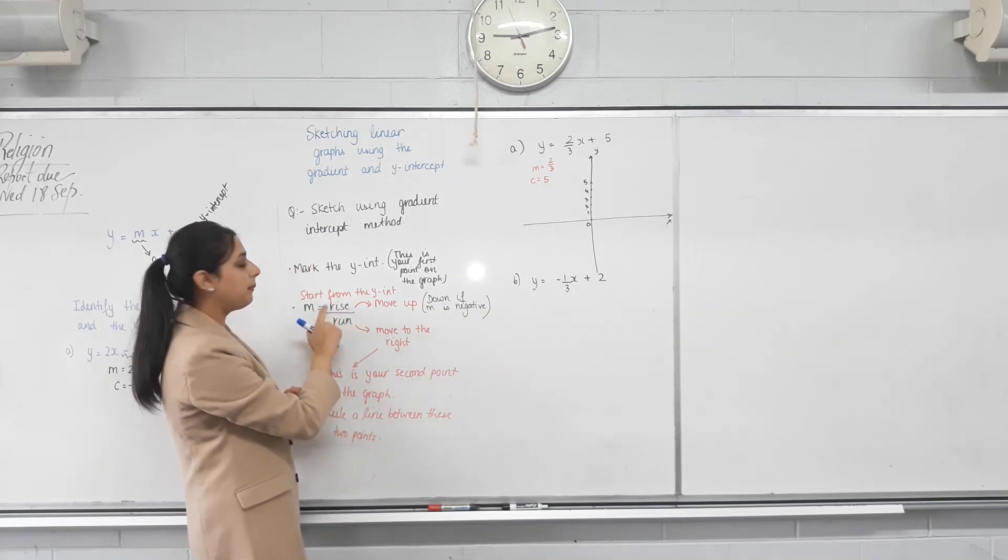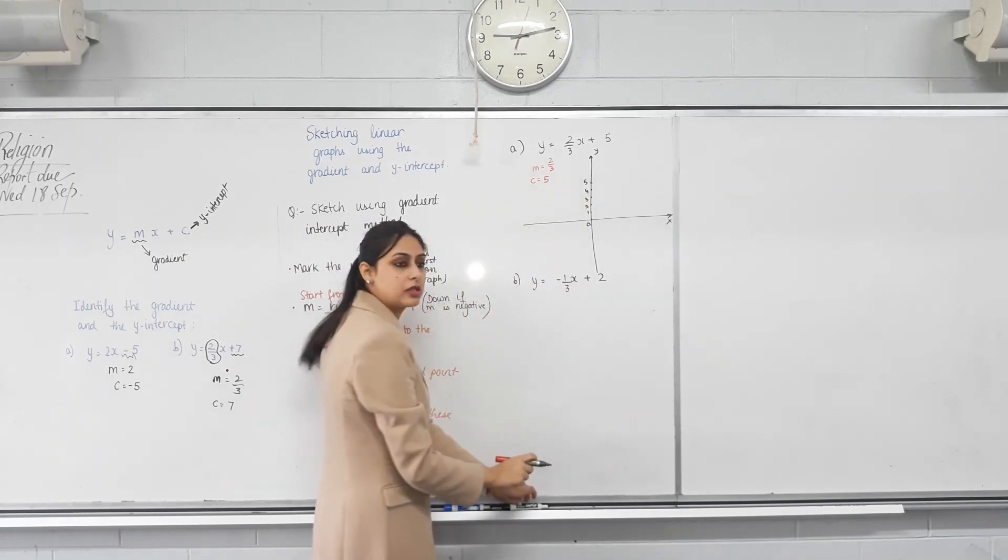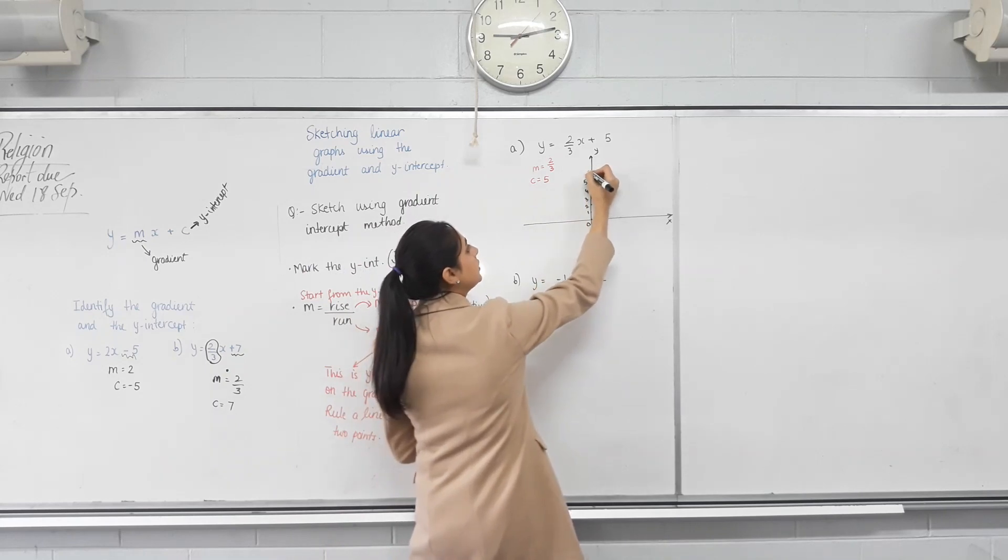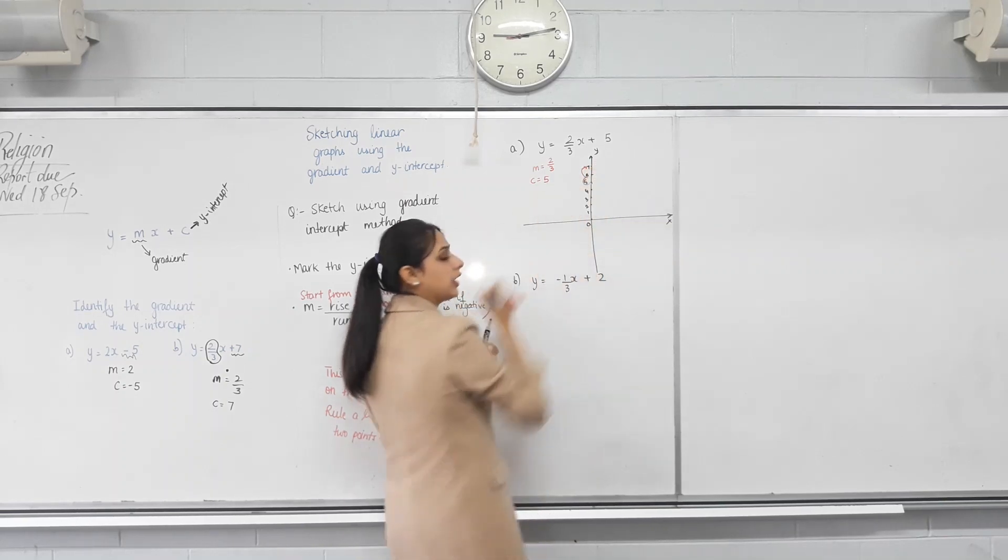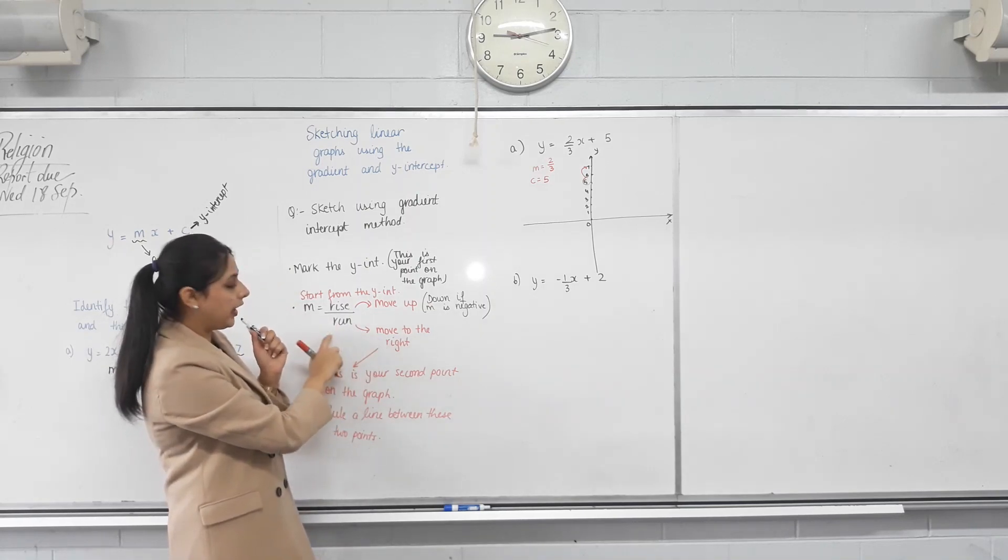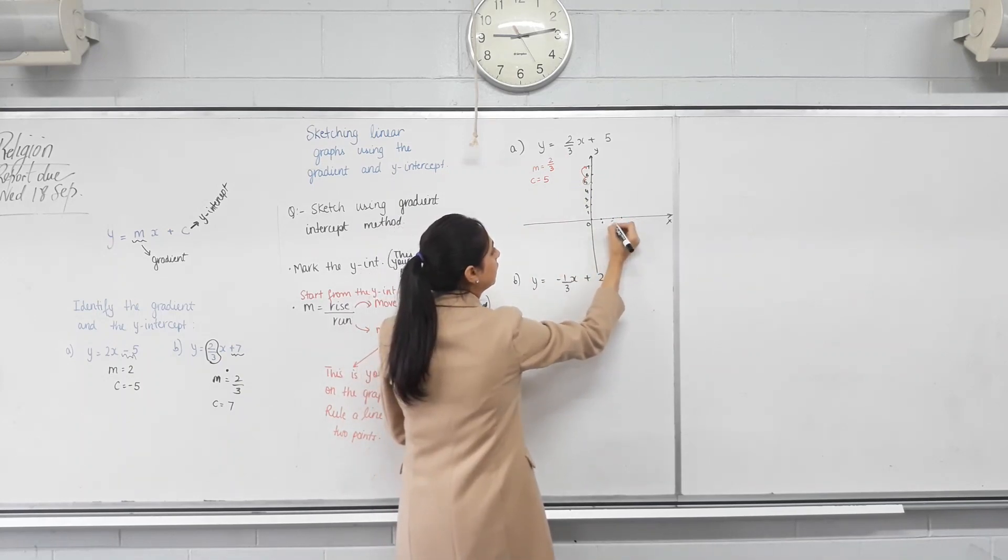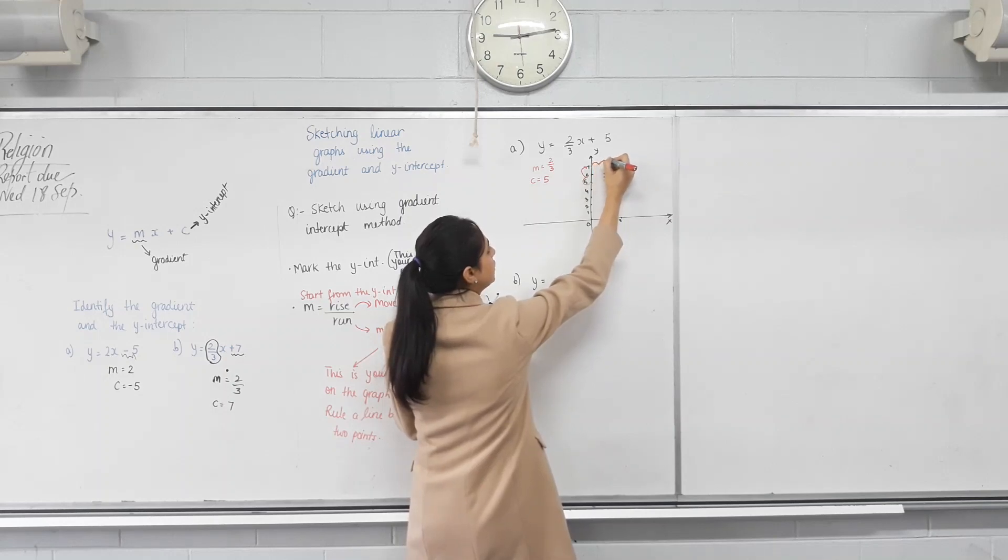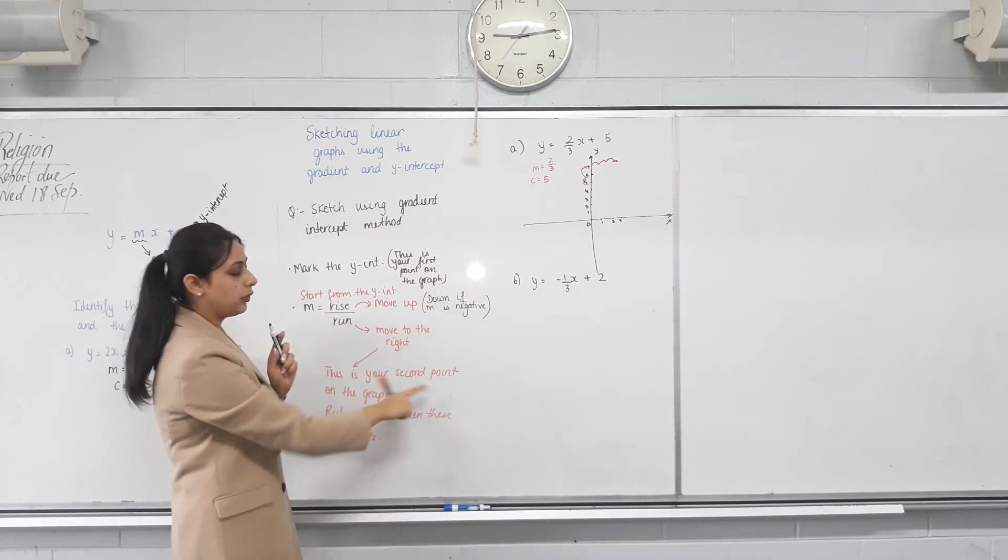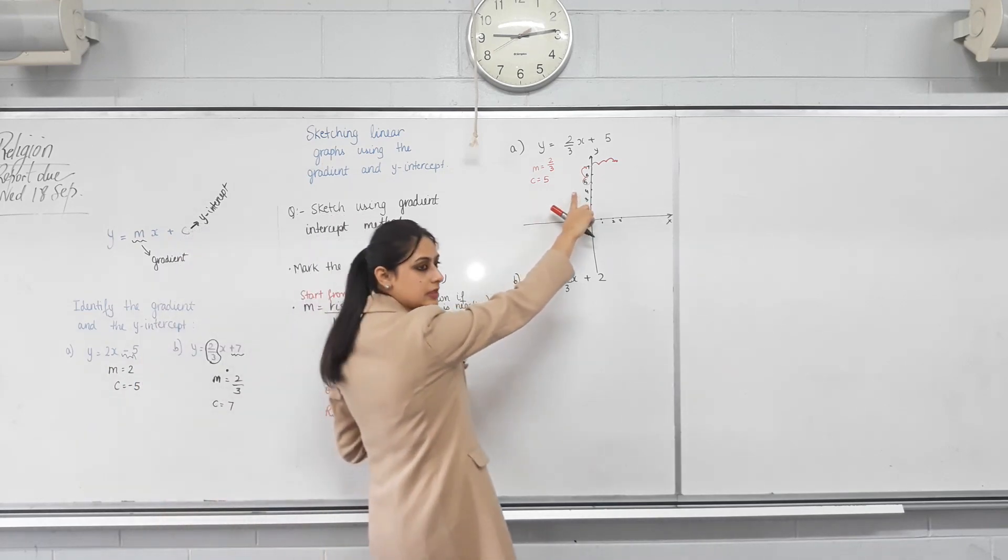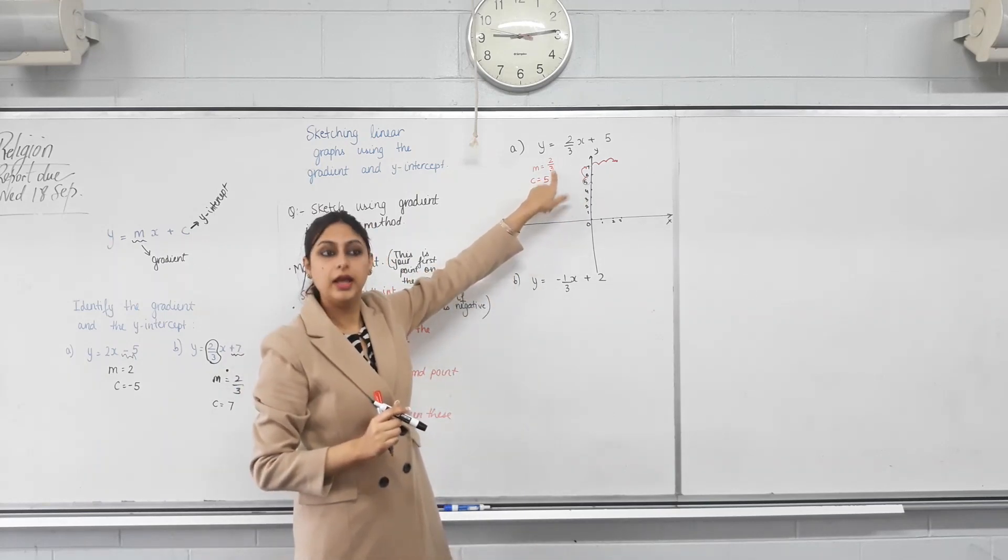If the gradient is positive, we move up that many units from that point. So, the rise is two. We need to move up how many units? Two. So, which point will I get to? If I move two units up, so I started from the first point, I moved one, two. Have I reached here? Yeah. Now, move to the right according to the run. What's the run? Three. So, I need to move right three units. So, from here, it said zero, you go one, two, three. Do you reach this point? Seven comma, three comma seven? That is your second point on the graph. So, the first point on the graph was the y-intercept. You started there. You moved up according to the rise. You moved right according to the run. And you got your second point.